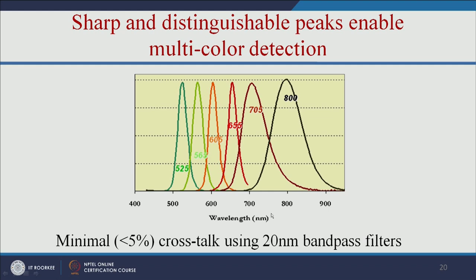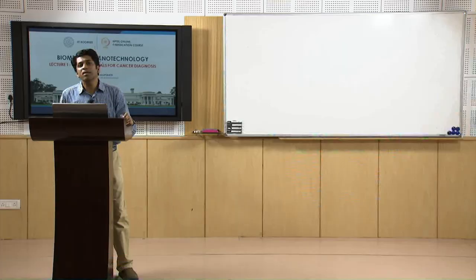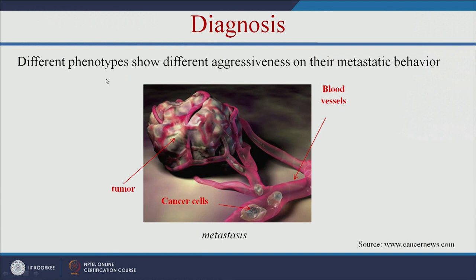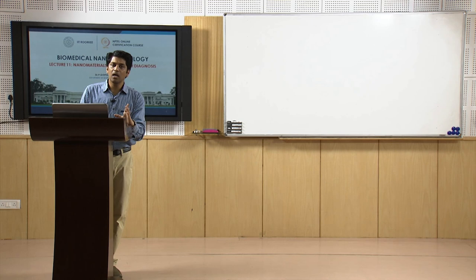This diagnosis should be multiplexed — cancer cells have multiple biomarkers that should be detected simultaneously. This cancer cell is expressing different types of markers on the surface, for example blue, purple, or red color. Different phenotypes show different aggressiveness in their metastatic behavior; based on the markers, we can determine whether the person is in the early or advanced stage of cancer.